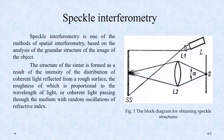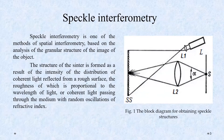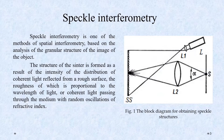Some information about speckle interferometry: it is one of the methods of spectral interferometry and is based on the analysis of the granular structure of the imaging of an object. Our blood has granules — these are our blood cells — so it is an object that we can use with this method.